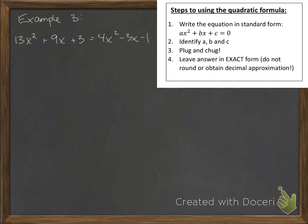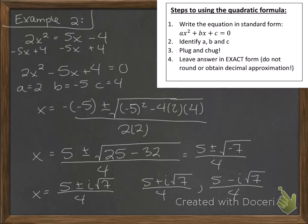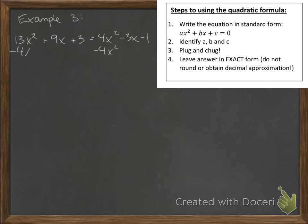Let's do another example. Here again we have a quadratic equation, but we don't yet have it in a form such that 0 is on one side. So I'm going to subtract 4x squared from both sides. I'm going to add 3x to both sides. And then I'm going to add 1 to both sides. So 13x squared minus 4x squared is 9x squared. 9x plus 3x is 12x. 3 plus 1 is 4. So I have 9x squared plus 12x plus 4 equals 0. Now you can actually do this with factoring. This is actually a perfect square trinomial. However, we are going to use this particular problem to practice the quadratic formula.